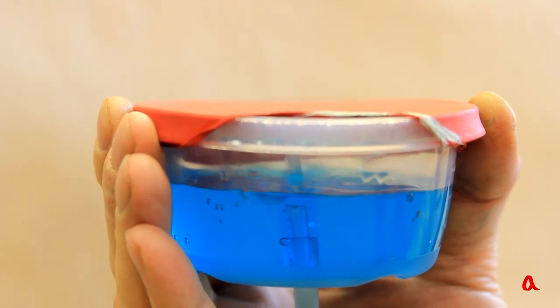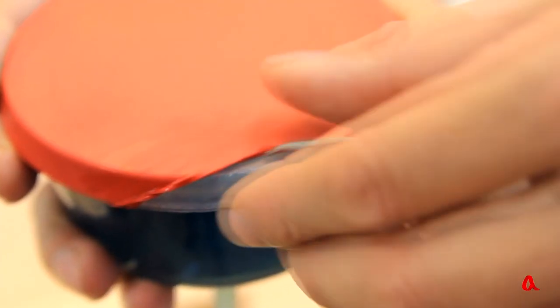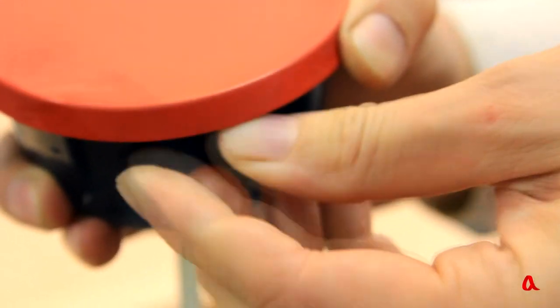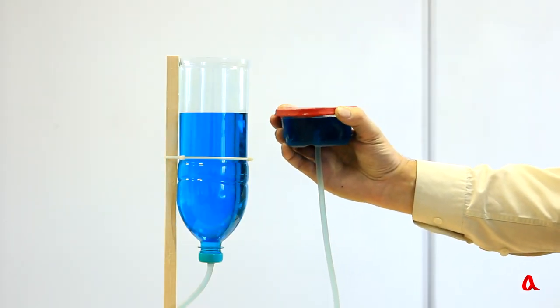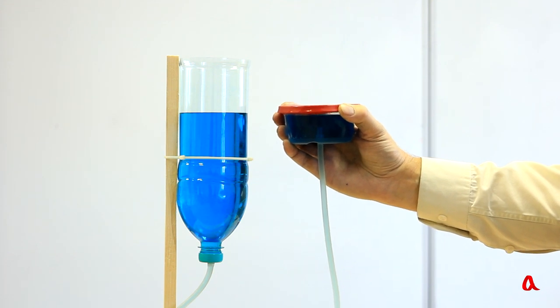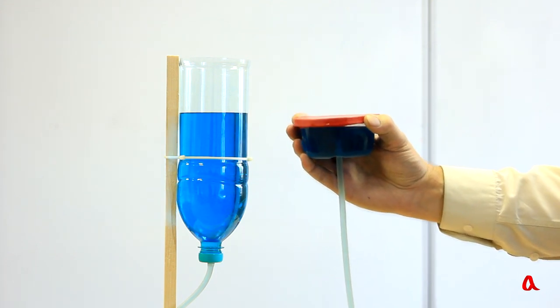The container is filled with water. Let's cover it fully with the film. When we hold the container at the bottle's water level, the film remains flat. Let us lower the container.